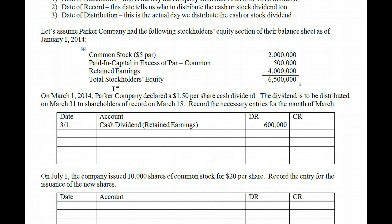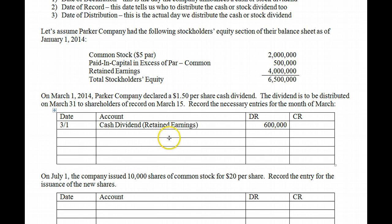So, 400,000 shares times $1.50 per share gives us a $600,000 dividend. That creates a payable, so we hit Cash Dividends Payable — or just Dividends Payable — for $600,000. That's our first entry on March 1st, the date we actually declare it.